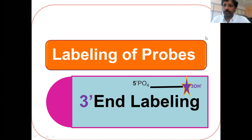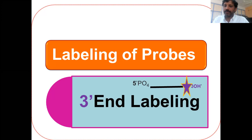Hello and welcome to the Primer Lecture Series, presented by Dr. K. Prem. Today we will discuss three prime end labeling. Three prime end labeling means incorporation of labels — radioactive nucleotides, fluorescent dye-attached nucleotides, or analogs.